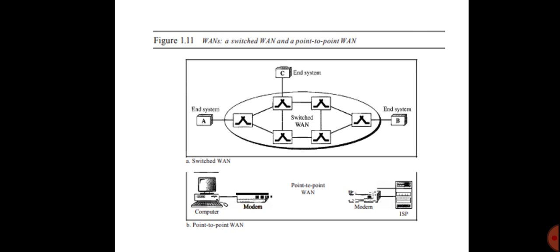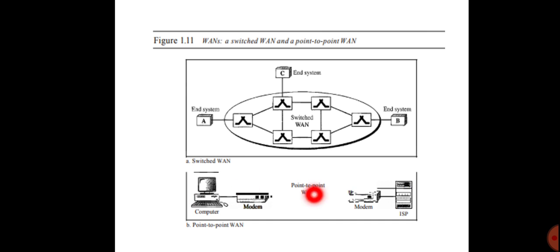This figure represents the WANs — a switched WAN and a point-to-point WAN. This diagram represents the switched WAN, and this diagram represents the point-to-point WAN.